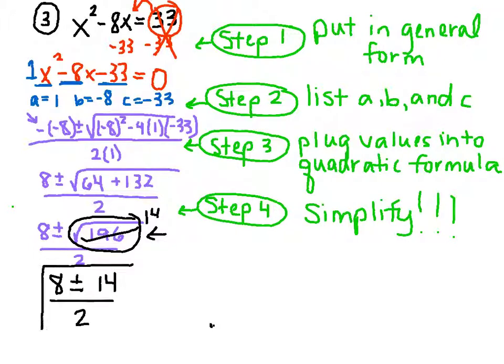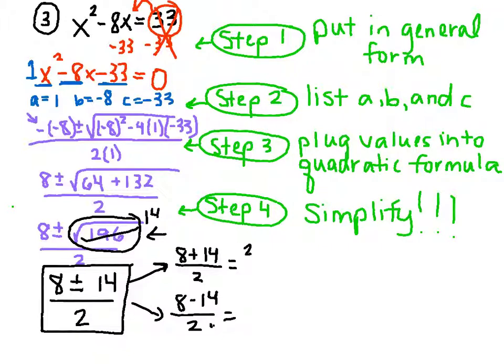Now when you get here, you're going to have two solutions. 8 plus 14 divided by 2, and 8 minus 14 divided by 2. So if we simplify that, 8 plus 14 is 22 divided by 2, and that gives us 11. So that's one of our zeros.